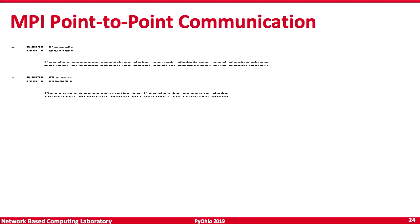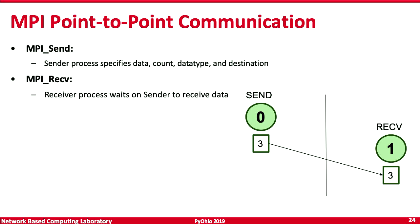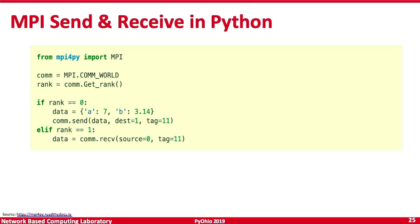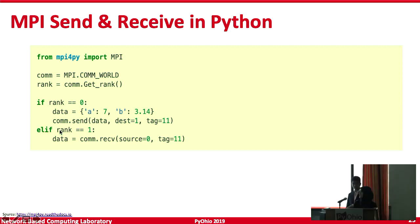In point-to-point communication, a sender process has specific data and specifies where it wants to send it, and a receiver process waits for that data. For example, process 0 has data value 3 and process 1 is waiting on process 0 to get that value. Here's a send and receive example in Python — you need the MPI for Python library to support MPI communication. This code is executed by both processes, but you distinguish what process 0 will do as sender and what process 1 will do as receiver.